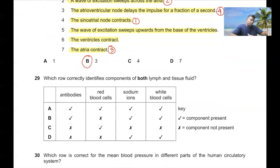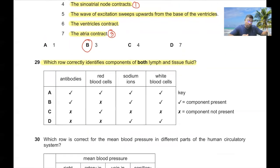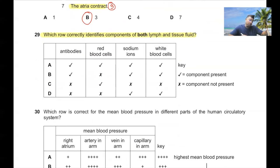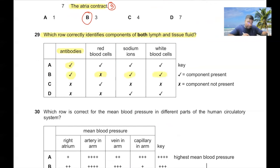Question 29: Which row correctly identifies components of both lymph and tissue fluid? Both lymph and tissue fluid contain antibodies, sodium ions, and white blood cells. They do not contain red blood cells. So option B is the correct answer for question 29.